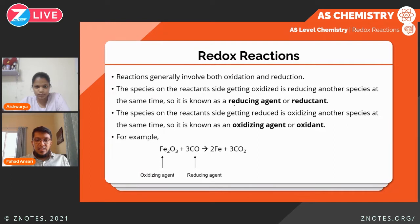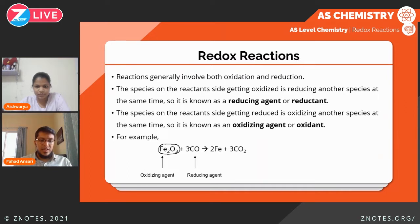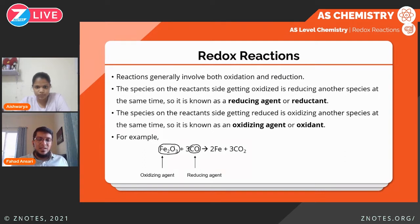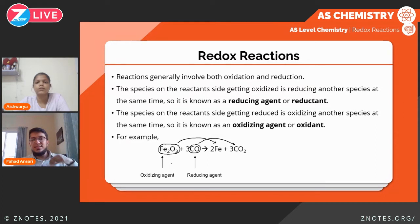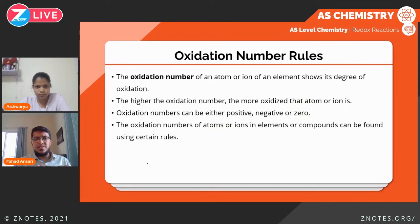In this equation we have two species. The oxidizing agent is iron three oxide — it itself gets reduced and causes whatever it reacts with to get oxidized. Carbon monoxide is the reducing agent because it reduces something else and in the process gets oxidized itself. Carbon monoxide reduces Fe₂O₃ to simple Fe, and Fe₂O₃ causes the carbon monoxide to be oxidized to CO₂ — it is the oxidizing agent because it oxidizes something else.